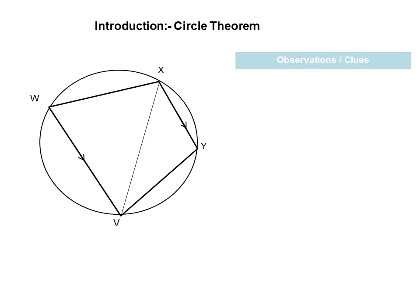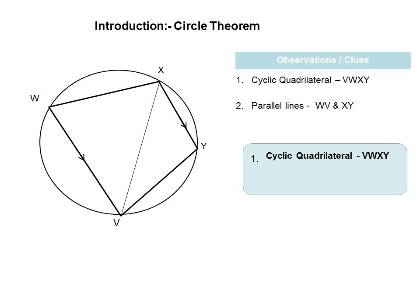In our first diagram, let us observe it carefully to see what we have as a clue. The first thing I've noticed is that I'm seeing a cyclic quadrilateral V, W, X and Y, and I'm also seeing as a second clue two parallel lines. For the cyclic quadrilateral, we first identify it as shaded, and then we know that the most common theorem to apply is that opposite angles are supplementary. So if angle Y is 94 degrees, then angle W plus angle Y should add to 180, therefore angle W would be 86 degrees.